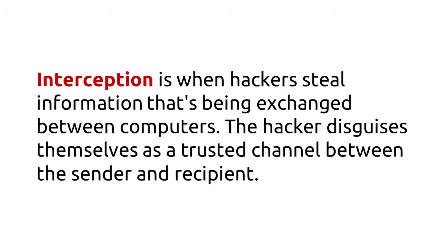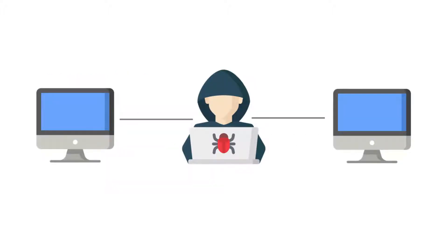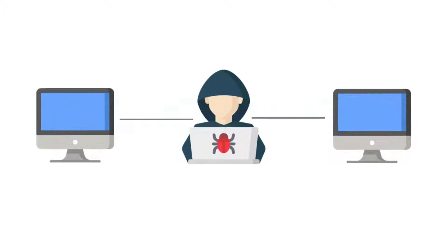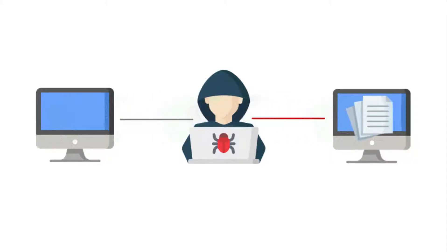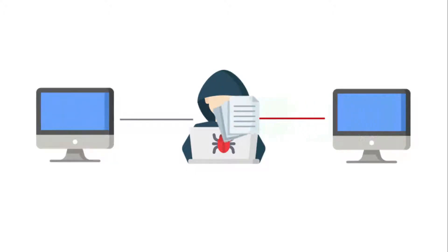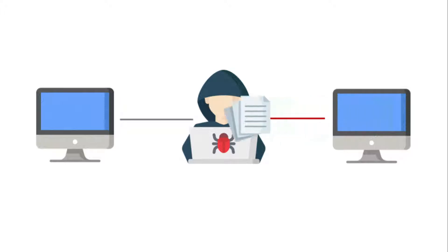Interception is when hackers steal information that's being exchanged between computers. The hacker disguises themselves as a trusted channel between the sender and recipient. One of the most common of these hacks is man-in-the-middle attacks — when the sender sends information thinking it goes to the recipient, but it actually goes to the hacker, who then forwards it to the original recipient. The exact process works in reverse as well. This attack is hard to catch because the hacker usually spoofs the IP or DNS records to make the information transfer look legitimate.